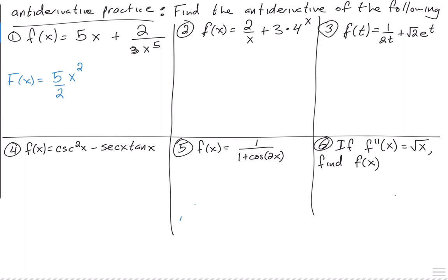Now this one right here — before you get the anti-derivative, what should you do? Move it up. Write it as x to the minus 5.